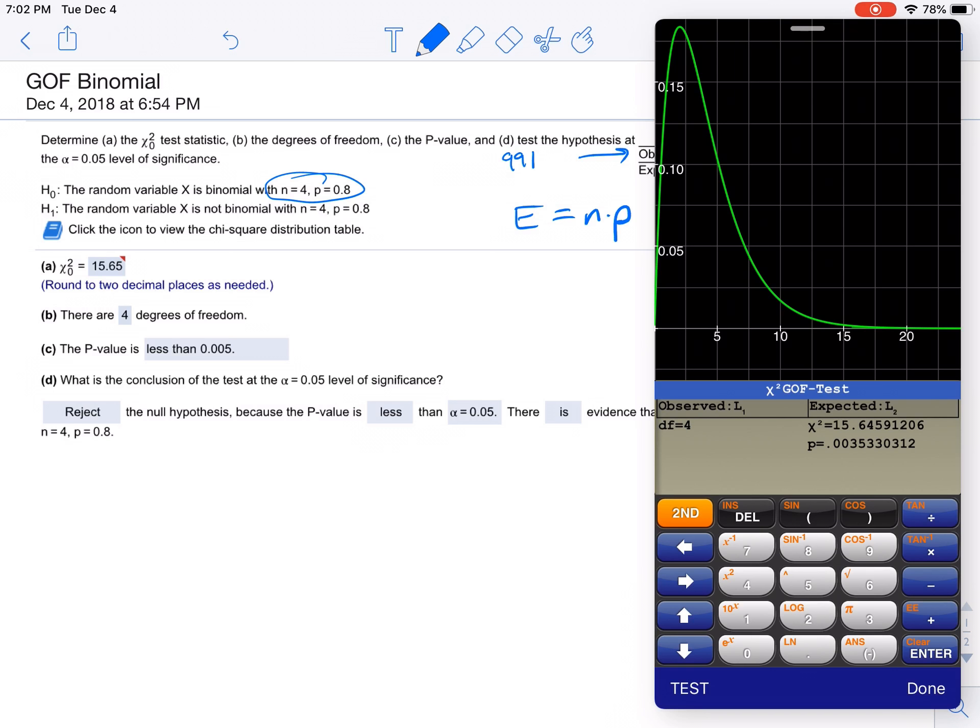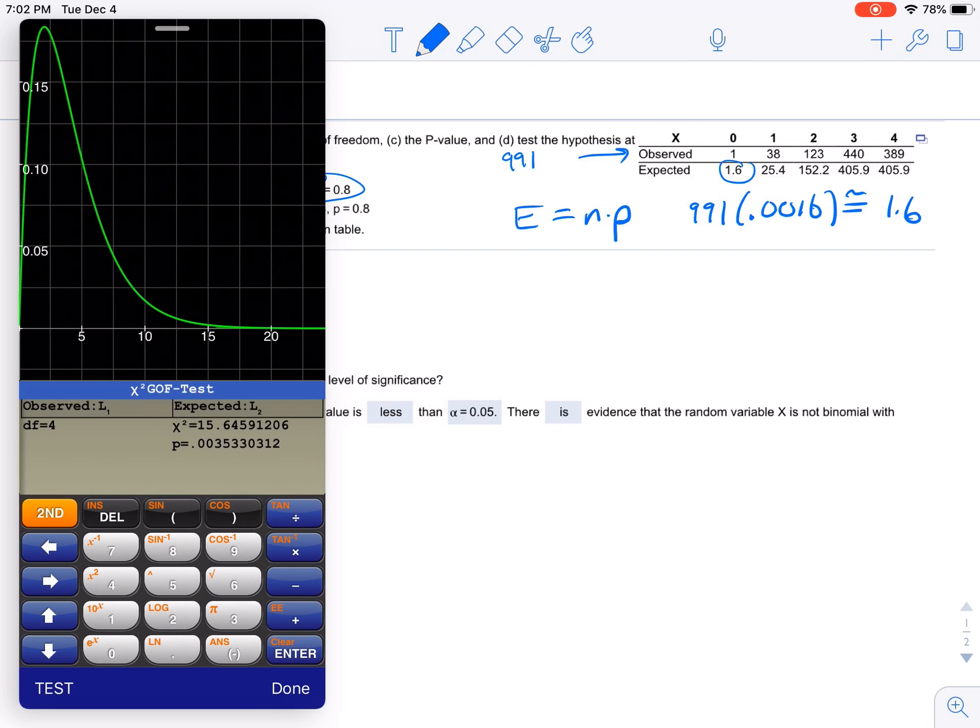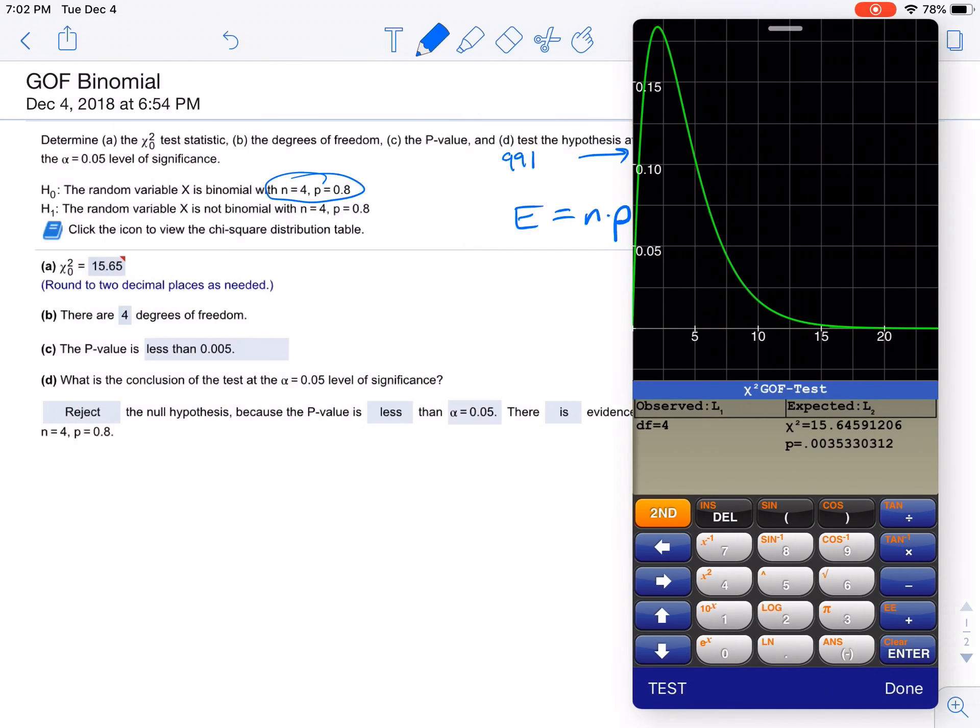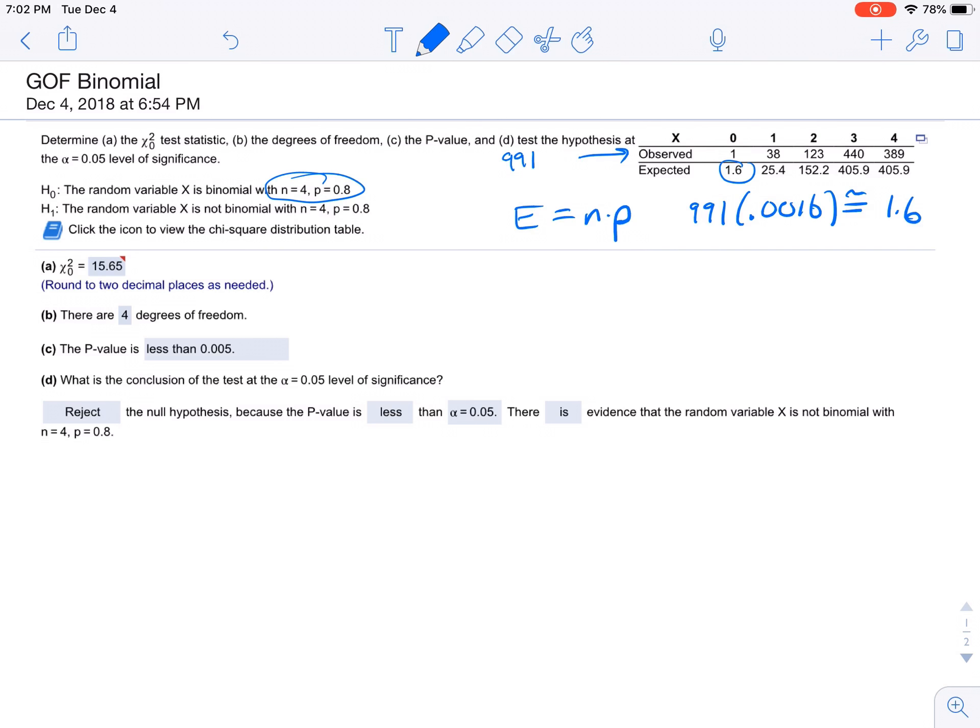What is the conclusion? We reject the null, because the p-value is less than 0.005. I like that, 0.005. And then there is sufficient evidence that the random variable X is not binomial, because we rejected the null. So the null was that it's binomial. So this data does not conform to a binomial distribution. And that's it.